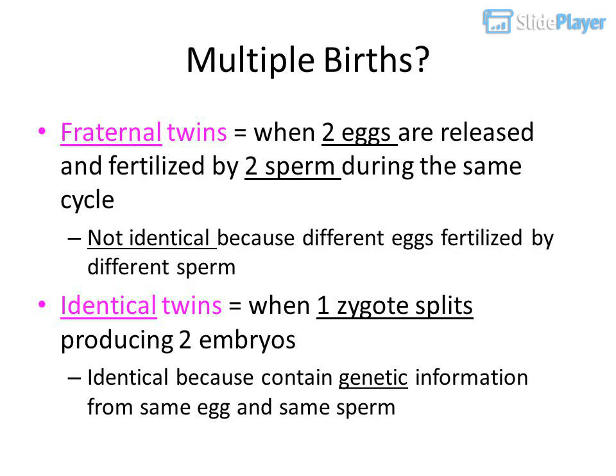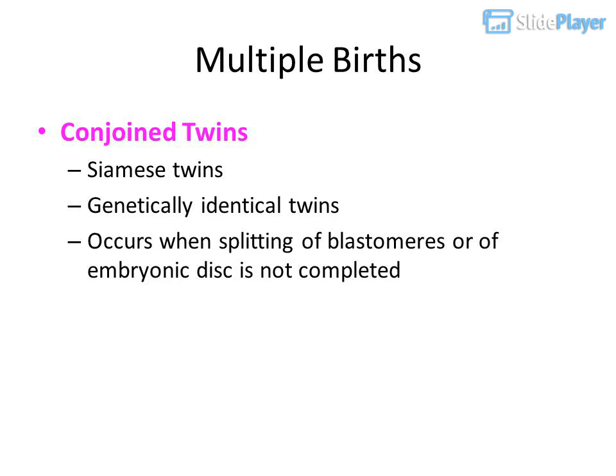Fraternal twins occur when two eggs are released and fertilized by two different sperm during the same cycle; they are not identical because different eggs are fertilized by different sperm. Identical twins occur when one zygote splits, producing two embryos that are genetically identical because they come from the same egg and sperm. Conjoined (Siamese) twins are genetically identical twins that occur when the splitting of blastomeres or the embryonic disc is not completed.